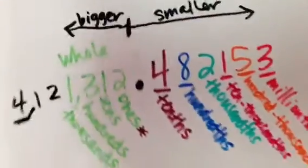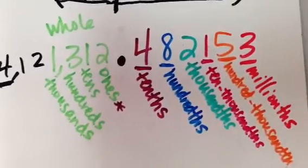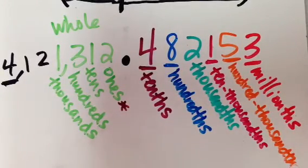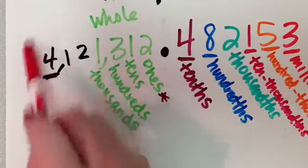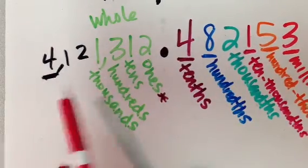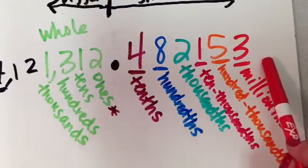But different than in whole number land, you don't want to have millionths of a decimal. You would much rather have millions because this over here, he's the bigger guy. This is very, very, very small.